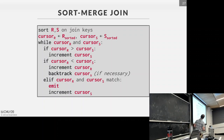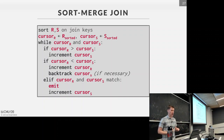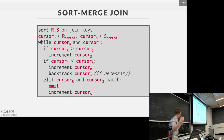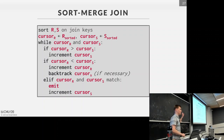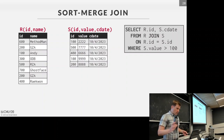Step one: sort the two tables R and S. Step two: create cursors at the top of each sorted relation. You advance those cursors based on comparing the equality keys — greater than or less than. If you have a match as you're iterating, you emit that tuple. There are scenarios where you'll need to backtrack, and we'll see an example of that. The pseudocode is more for your reference when studying.